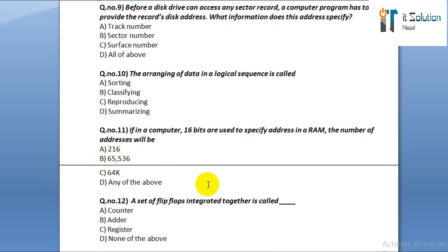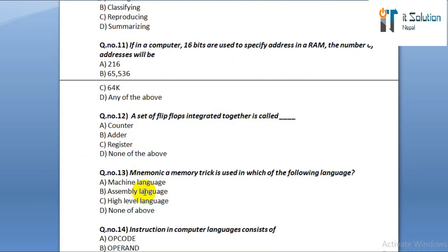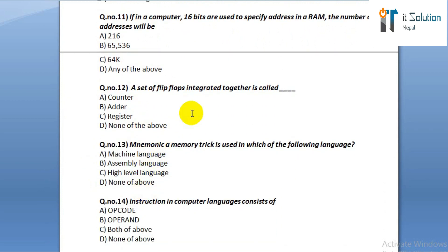Question number ten: the arranging of data in logical sequence is called option A: sorting. Option B: classifying. Option C: reproducing. Option D: summarizing. Question number eleven: if a computer uses 16 bits to specify an address in RAM, the number of addresses will be option A: 2^16.